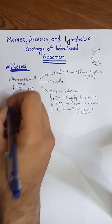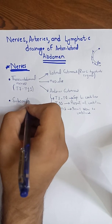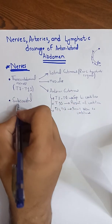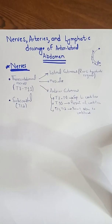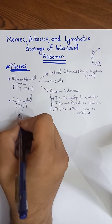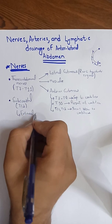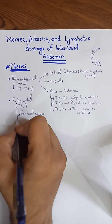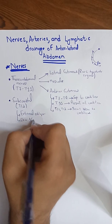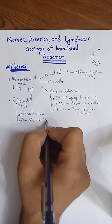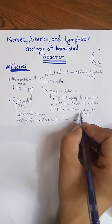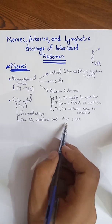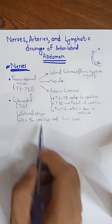The next nerve is the subcostal nerve, which arises from T12. This subcostal nerve supplies the external oblique muscle and the skin between the umbilicus and the iliac crest — that is, the cutaneous innervation to the skin below the umbilicus down to the iliac crest.